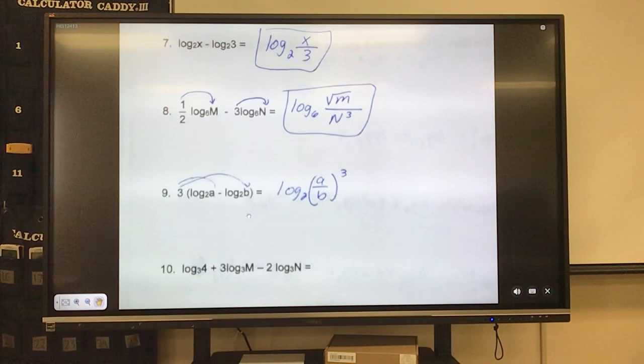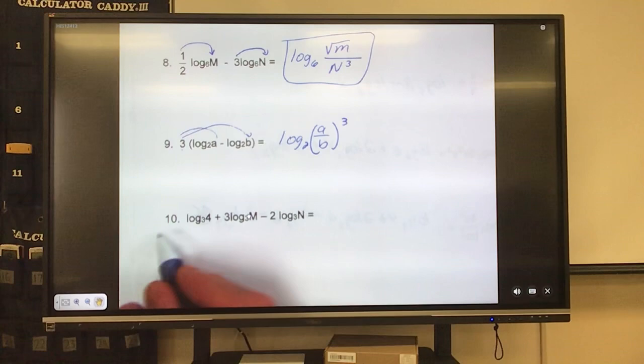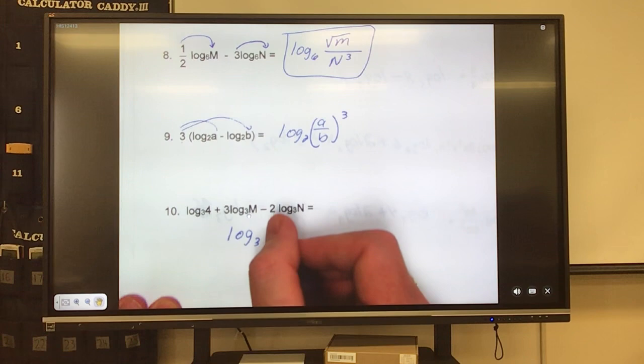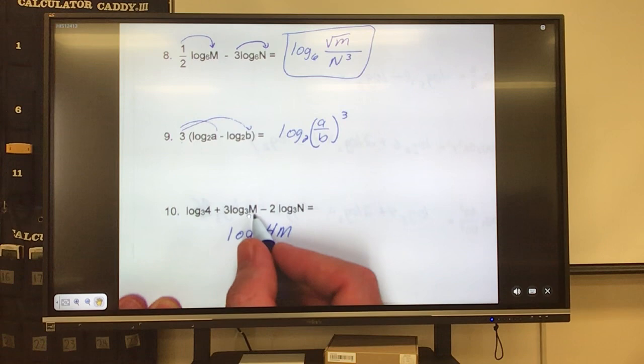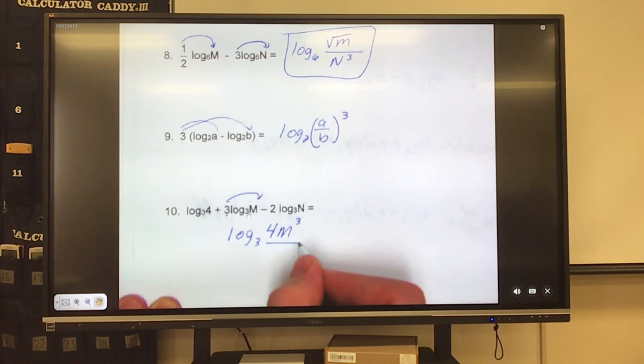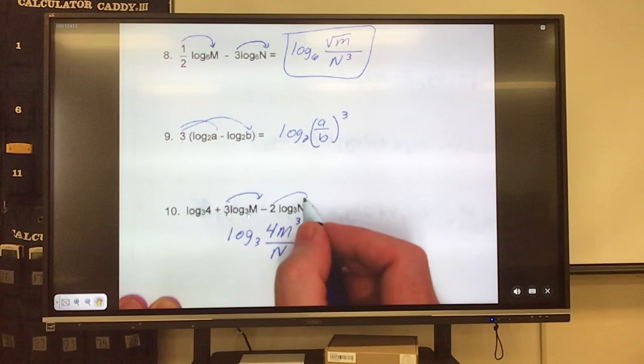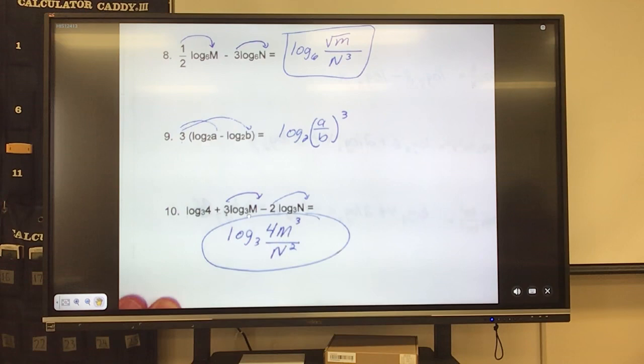This guy here is going down the line. Plus means multiply, so we have log base 3 of 4 times m raised to the third power, and subtract means divide into n to the second power. Too easy? Flip it.